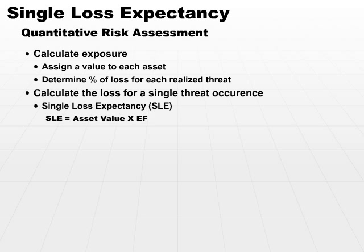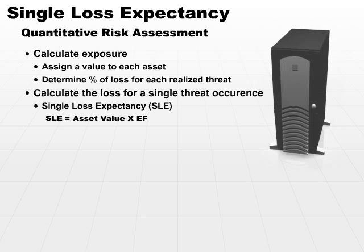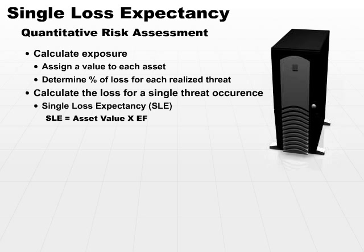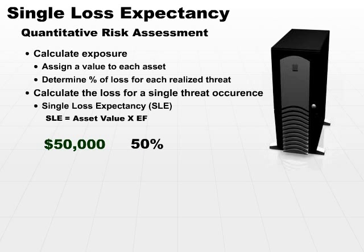Let's try this with a file server example. Assume we have a file server, and a disk crash will remove half the value of that file server. The file server costs $50,000. If we have a hard disk crash and lose 50% of our value, the exposure factor is 50%, and the single loss expectancy is $50,000 times 50%. So our SLE, our single loss expectancy, in that case would be $25,000.